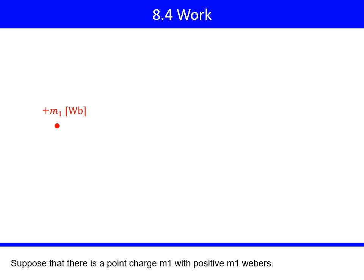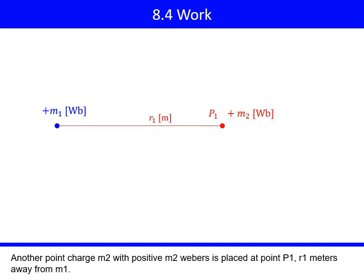Suppose that there is a point charge M1 with positive M1 Webbers. Another point charge M2 with positive M2 Webbers is placed at point P1, R1 meters away from M1.